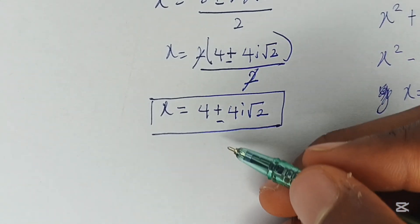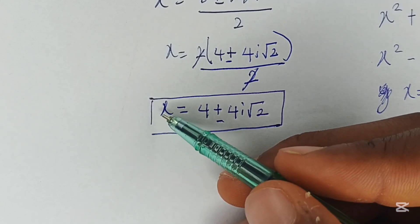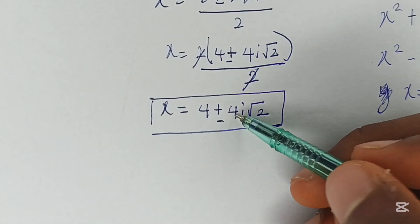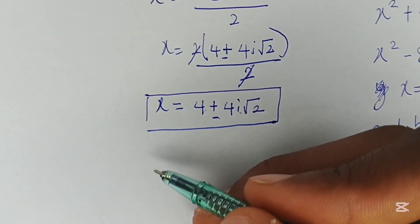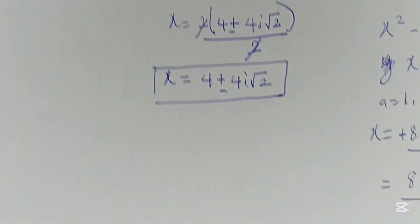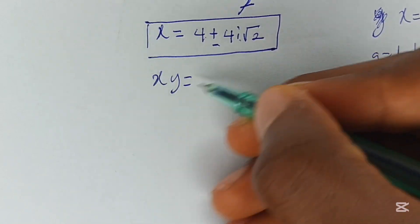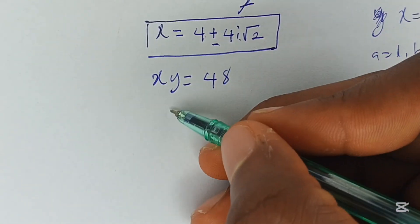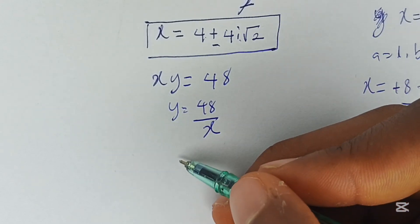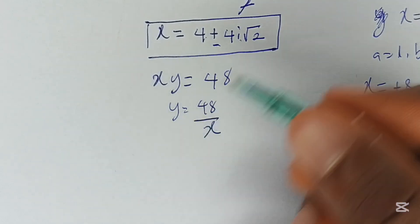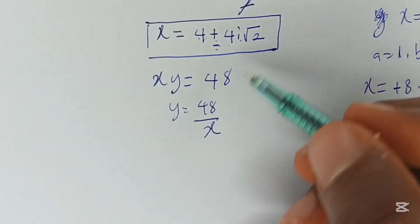So the 2 cancels, leaving x equal to 4 plus or minus 4i root 2. Moving on, we've seen the two values for x: x is either 4 plus 4i root 2 or 4 minus 4i root 2.